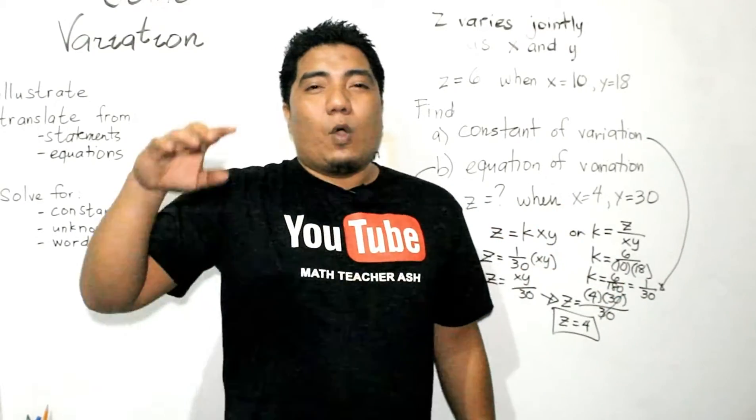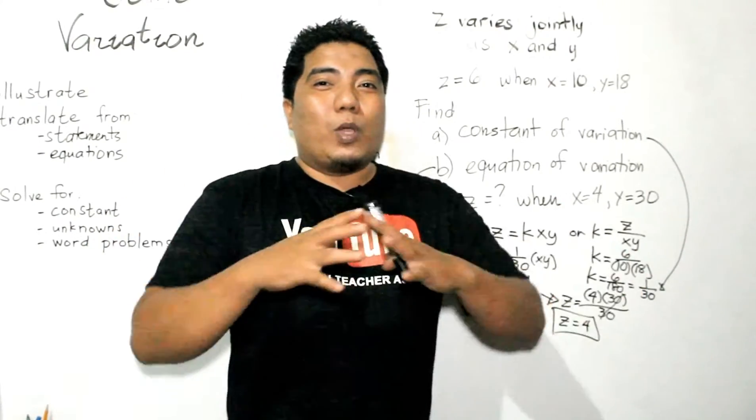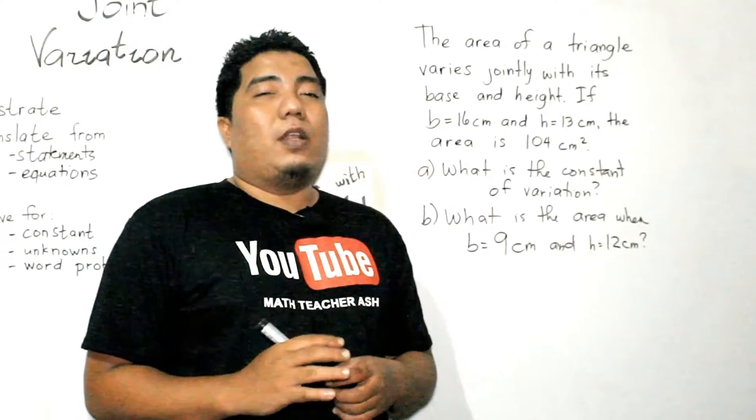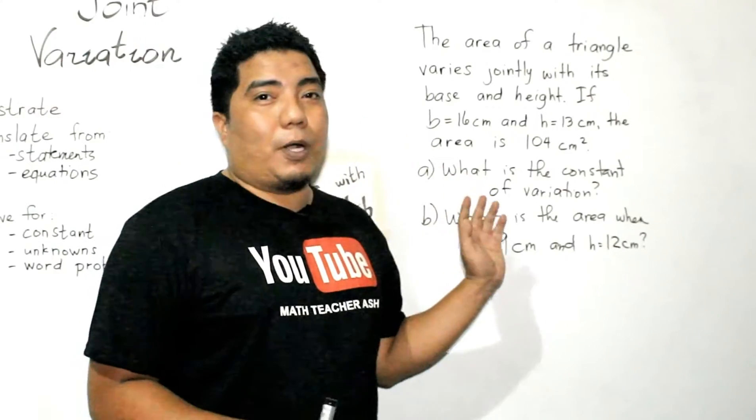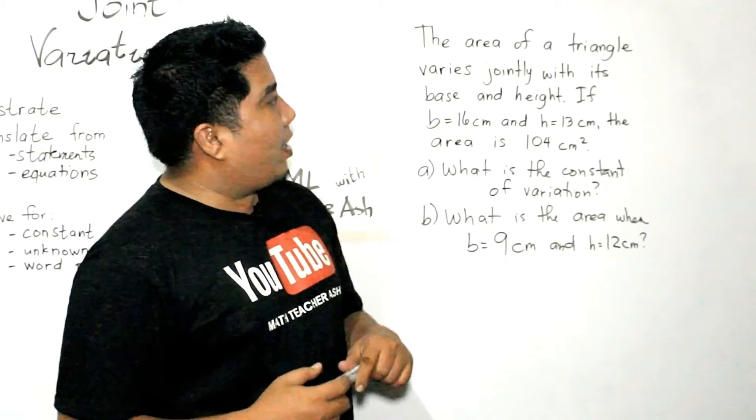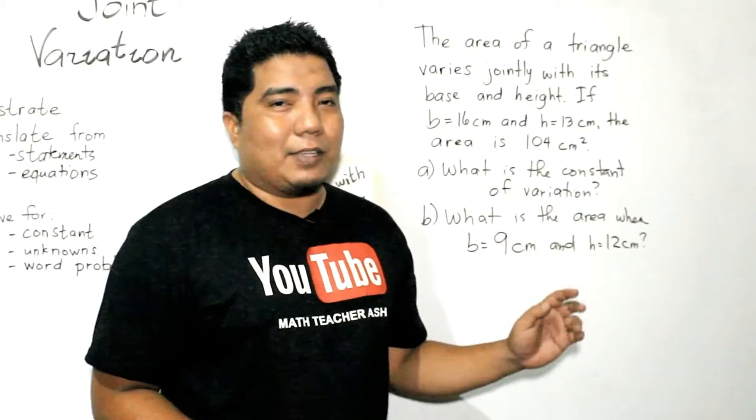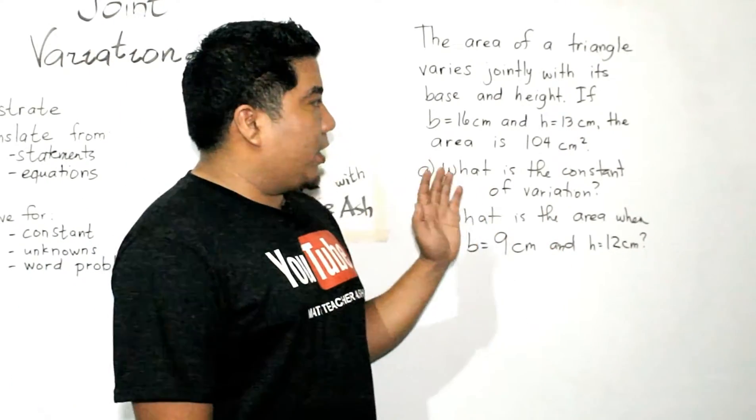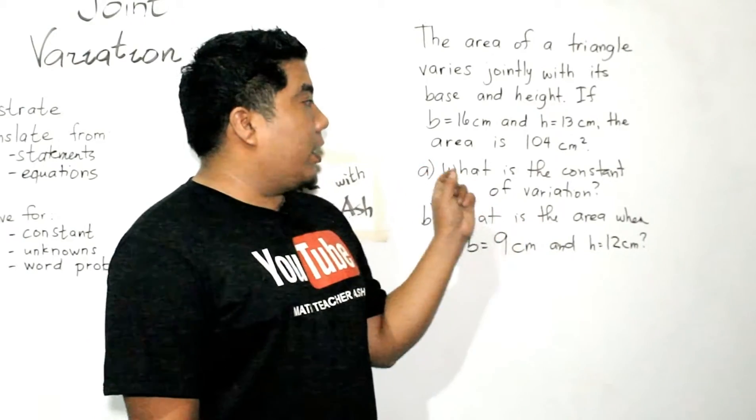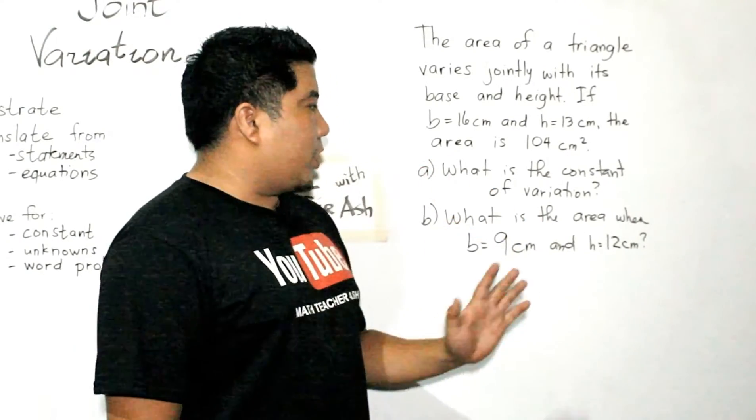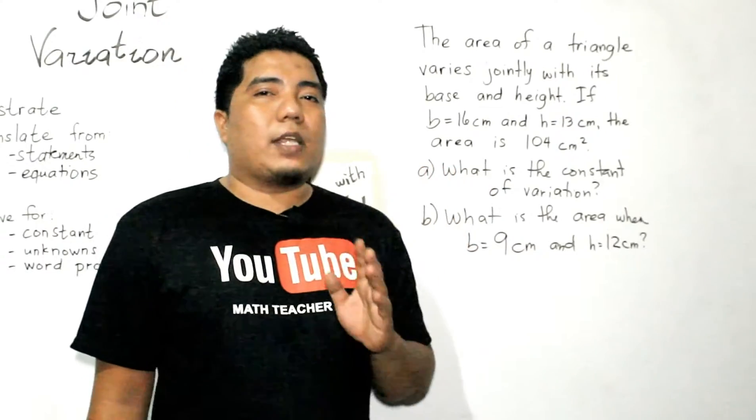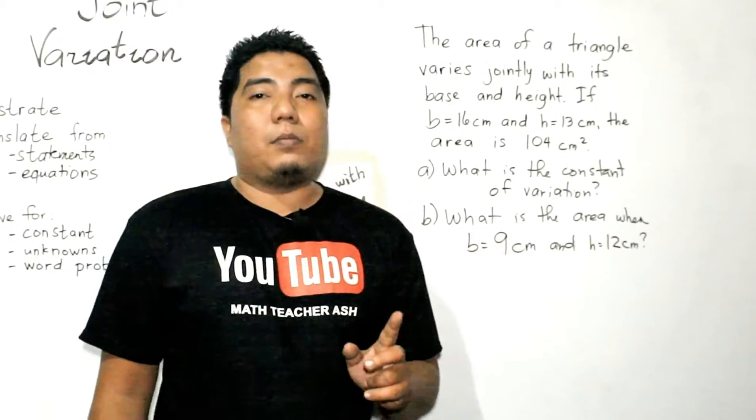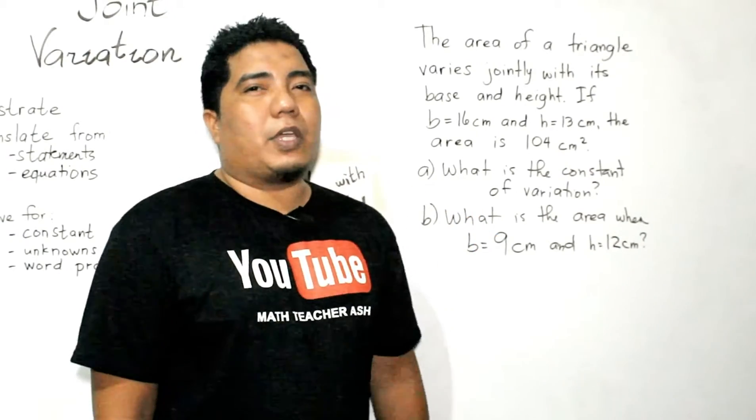Now, let us have one word problem before we will wrap up our discussion. Okay, math learners, we are here to our final example and this is a word problem. It states, the area of a triangle varies jointly with its base and height. If the base is 16 centimeters and height is 13 centimeters, the area is 104 square centimeters. The questions are, what is the constant of variation? What is the area when your base is 9 centimeters and your height is 12 centimeters?